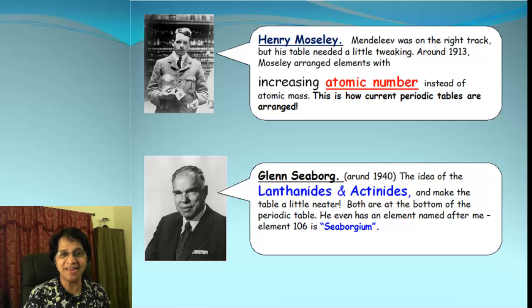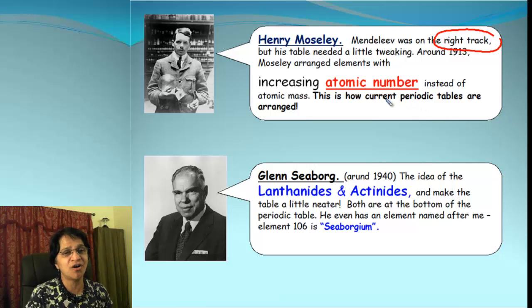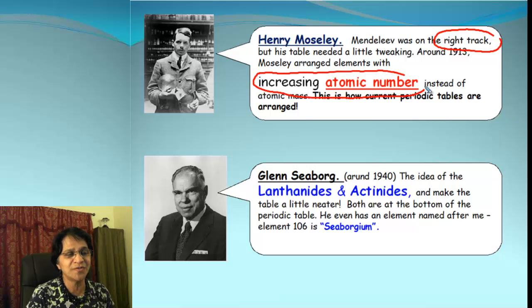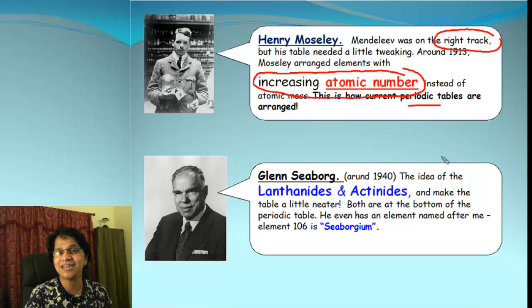So Henry Moseley decided to put Mendeleev's periodic table on the right track. He took the elements and arranged them in the order of increasing atomic number, and that's what we have in today's periodic table.